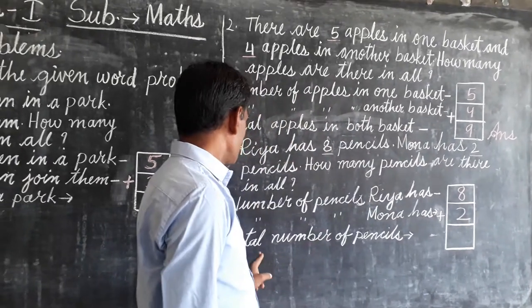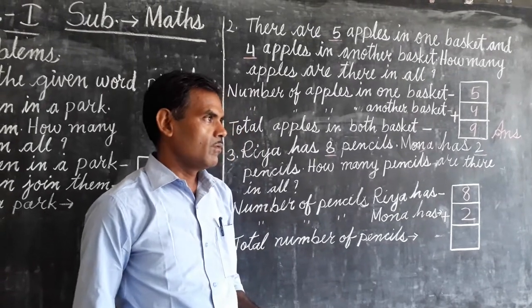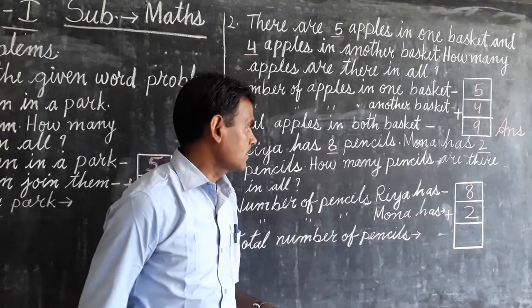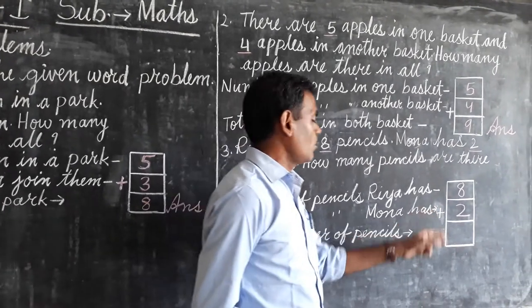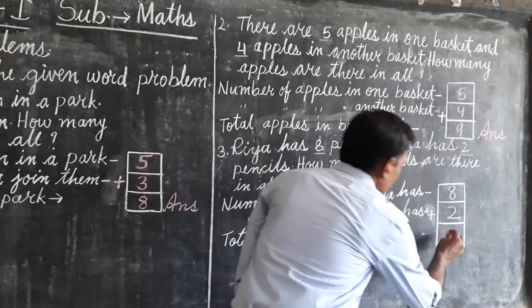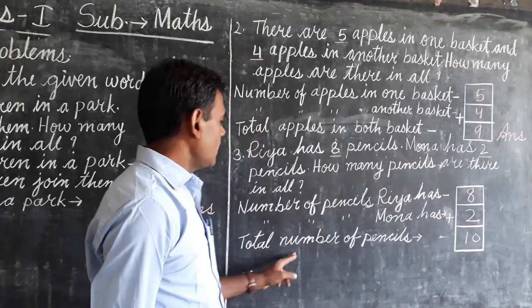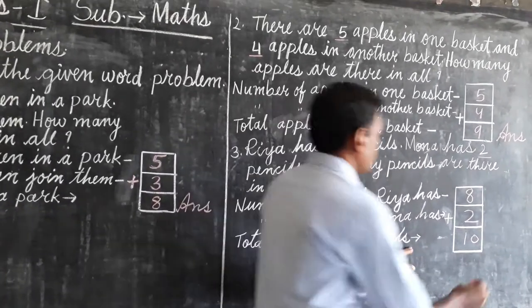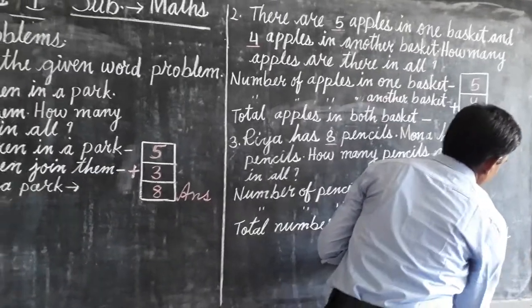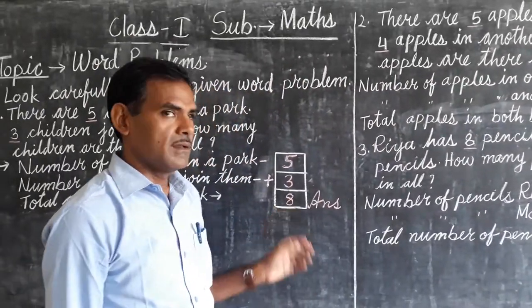Then, total number of pencils. What do you do — plus or minus? You do plus. 8 plus 2 equal to 10. Your answer is: total number of pencils is 10. This is your answer. This is your word problems. Thank you.